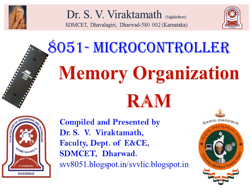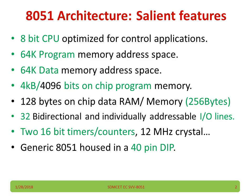About the RAM we are going to discuss in this video. The 8051 has salient features: it is an 8-bit CPU, 64K program memory address space, 64K data memory address space, 4K on-chip program memory, and 128 bytes of on-chip data RAM — and this only we are going to discuss in this video in detail.